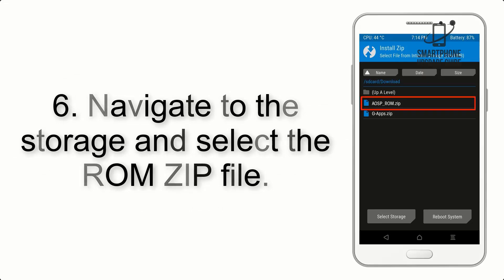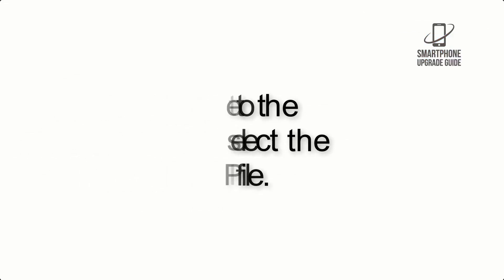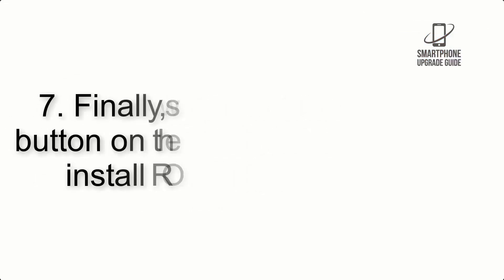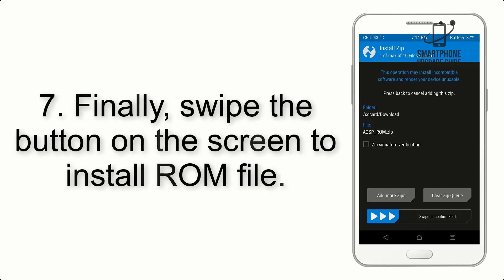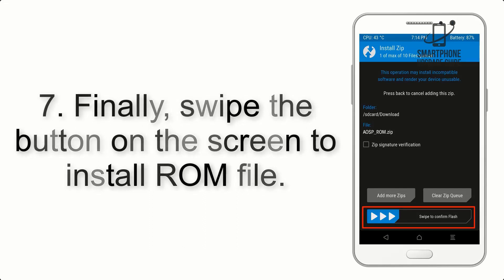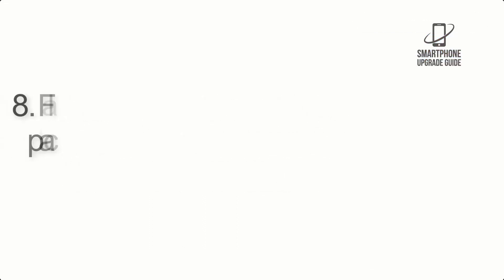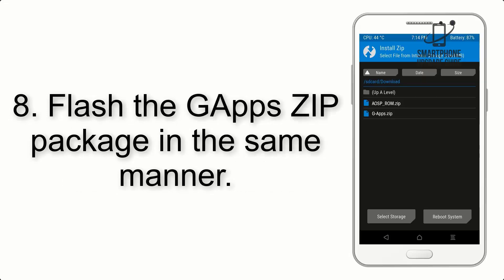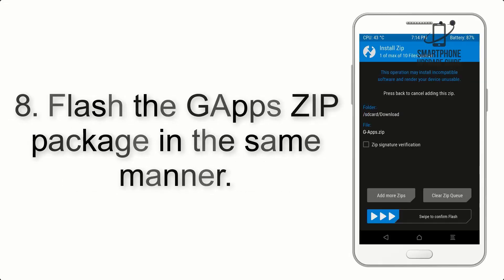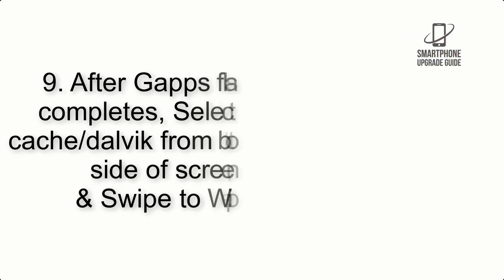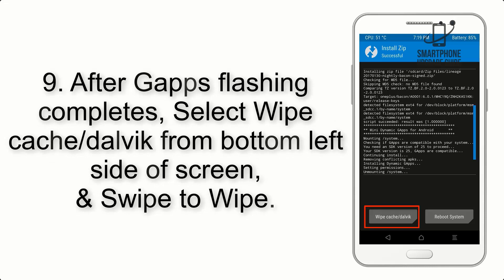Step 5: Go back to the recovery main screen and tap on the Install button. Step 6: Navigate to the storage and select the ROM zip file. Step 7: Finally, swipe the button on the screen to install the ROM file. Step 8: Flash the GApps zip package in the same manner.